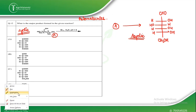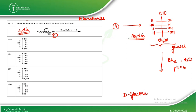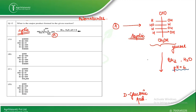This is a straightforward reaction from the biomolecules chapter. When glucose undergoes bromination in the presence of water at pH 6, this is an oxidation reaction. Under these acidic conditions, the CHO (aldehydic group) is converted into COOH — giving gluconic acid.